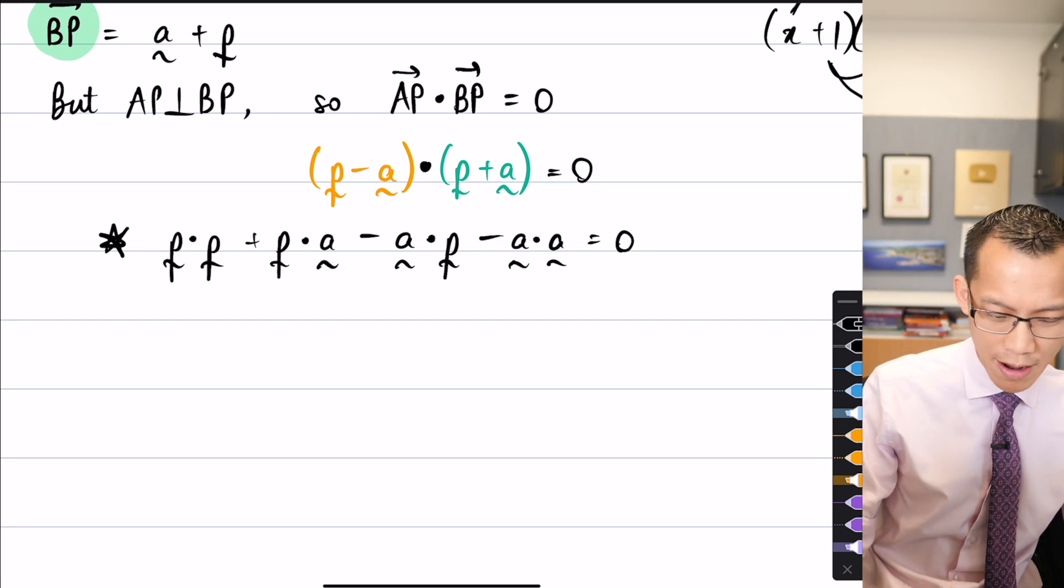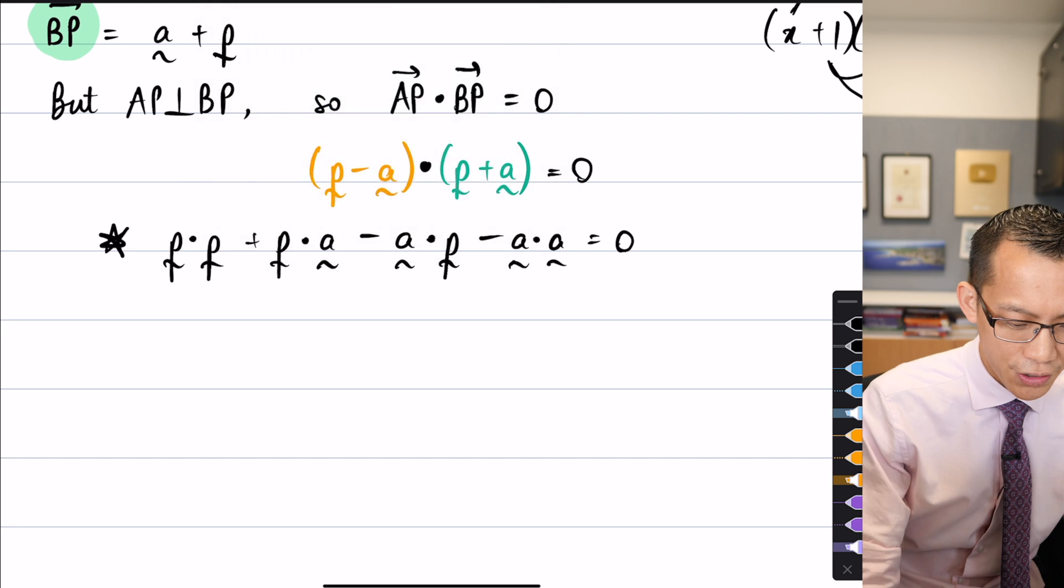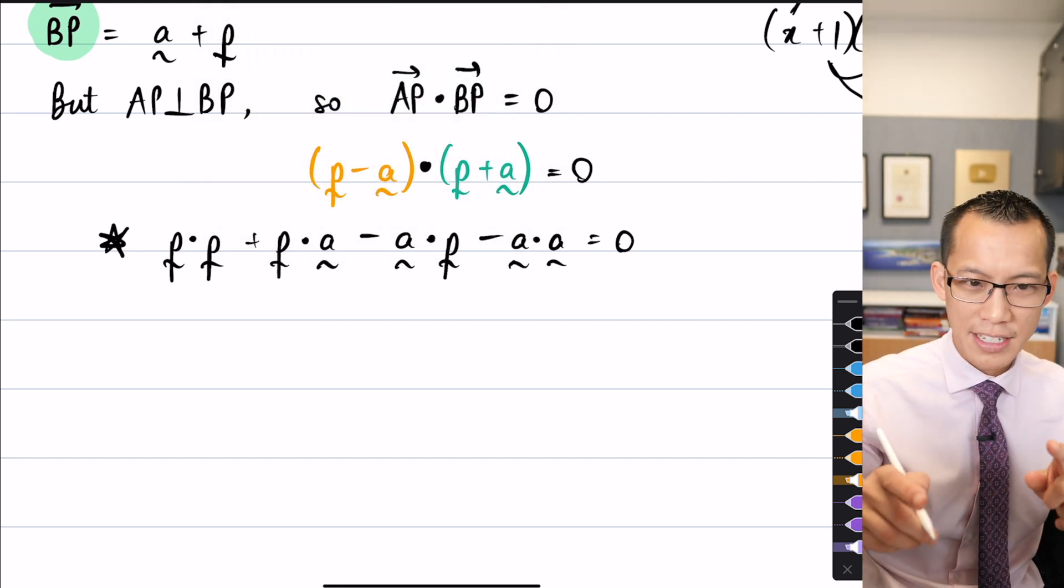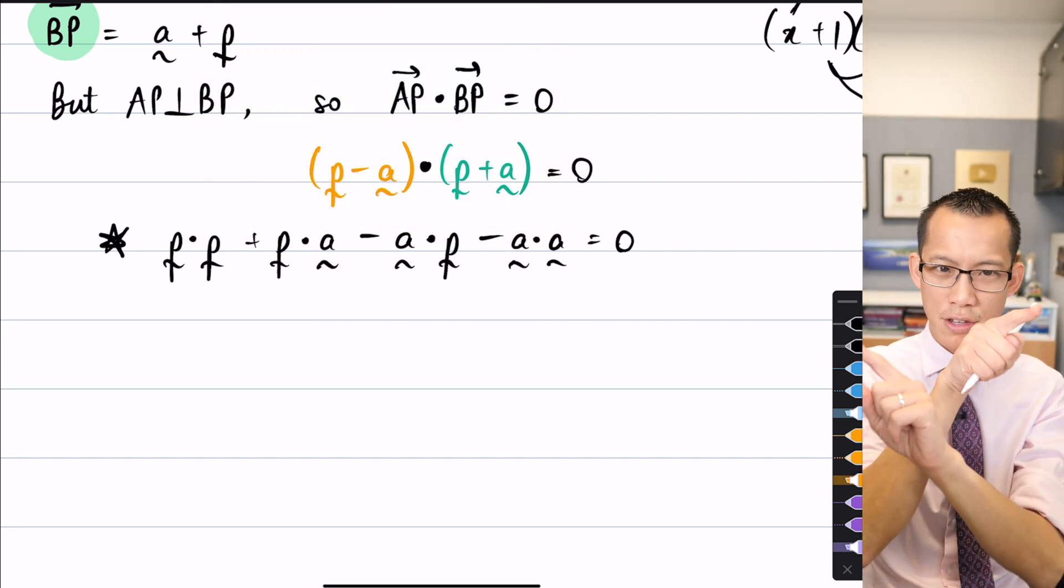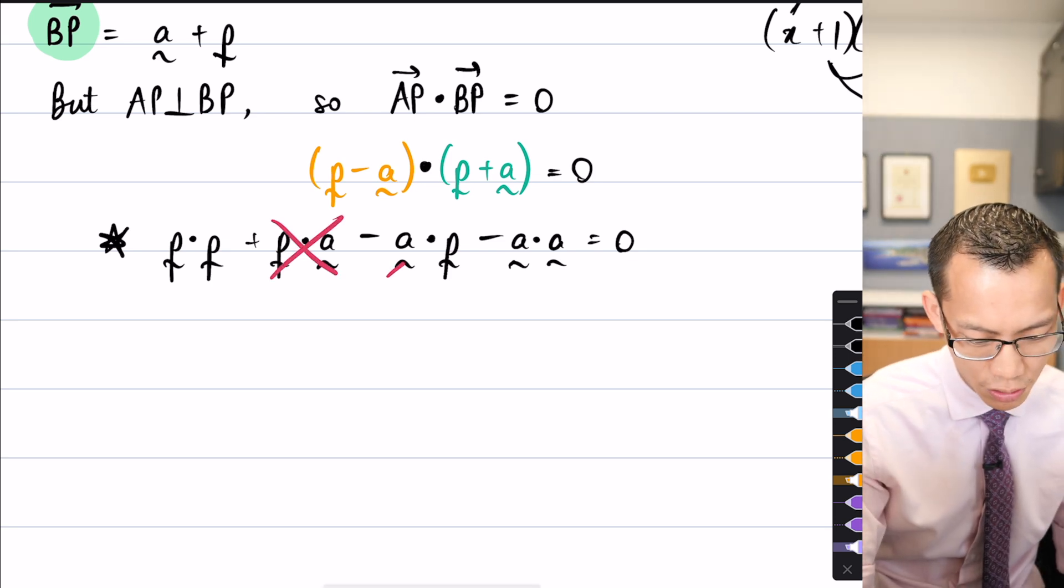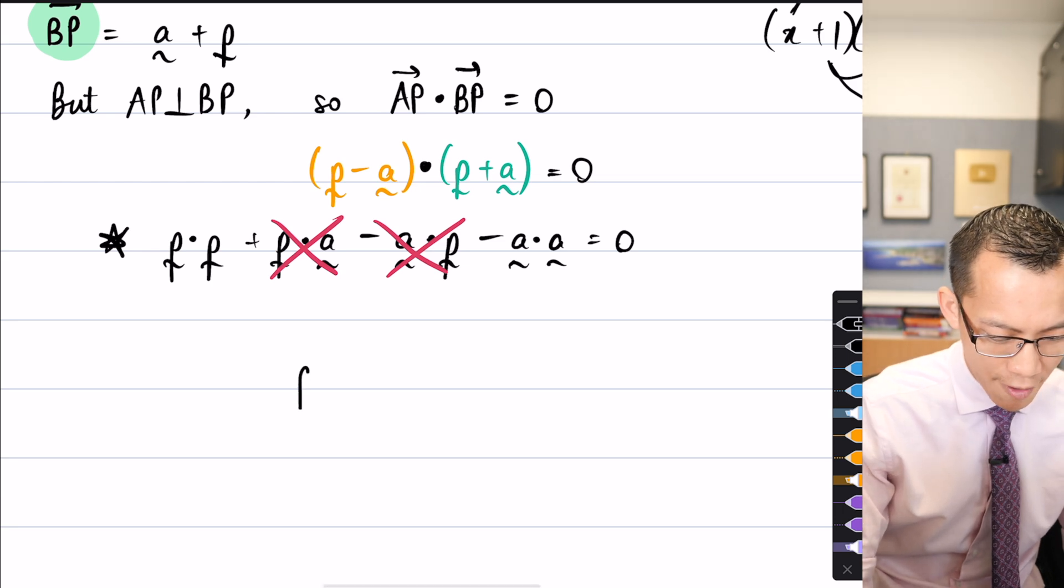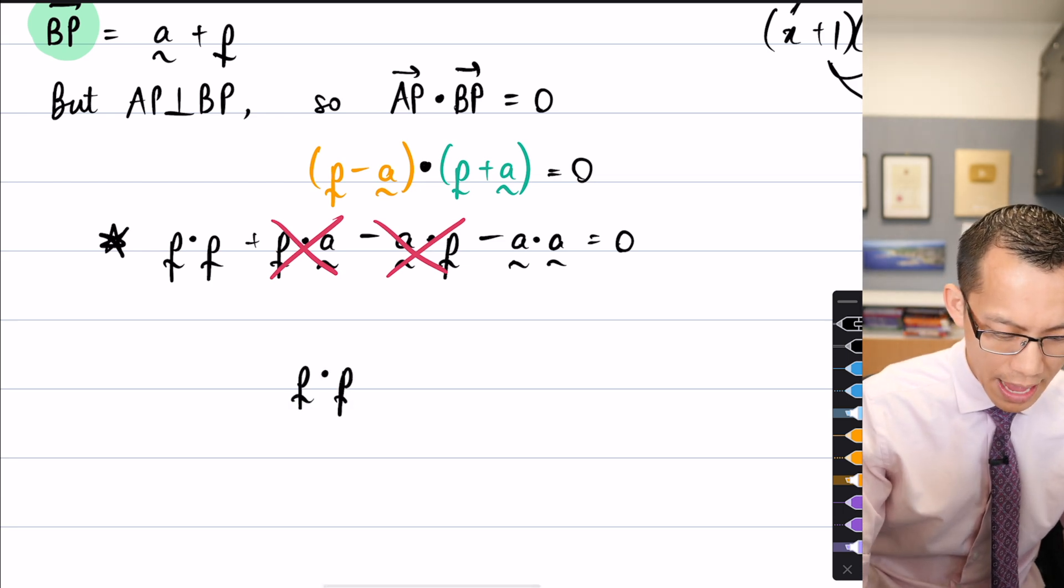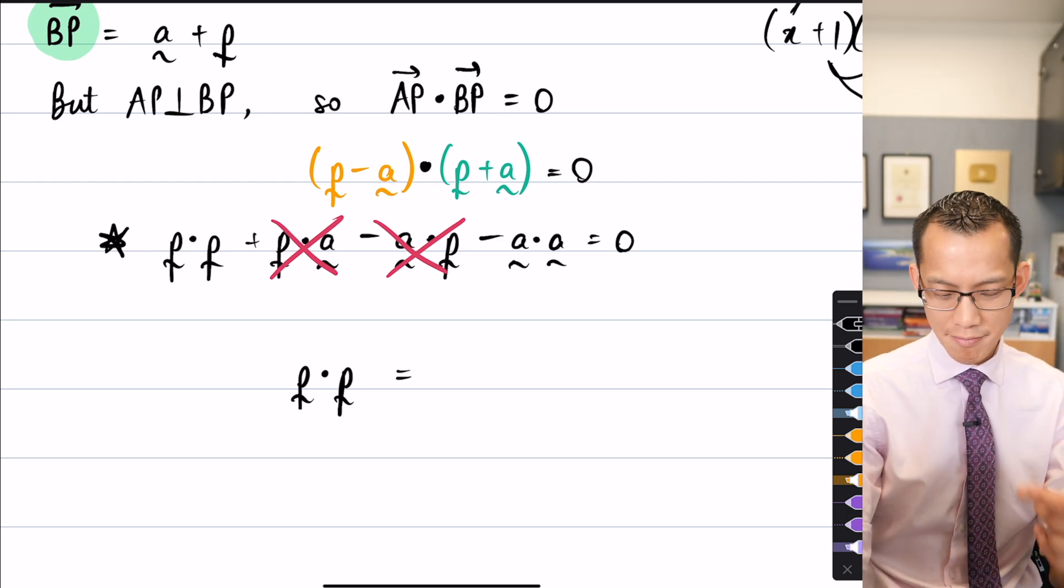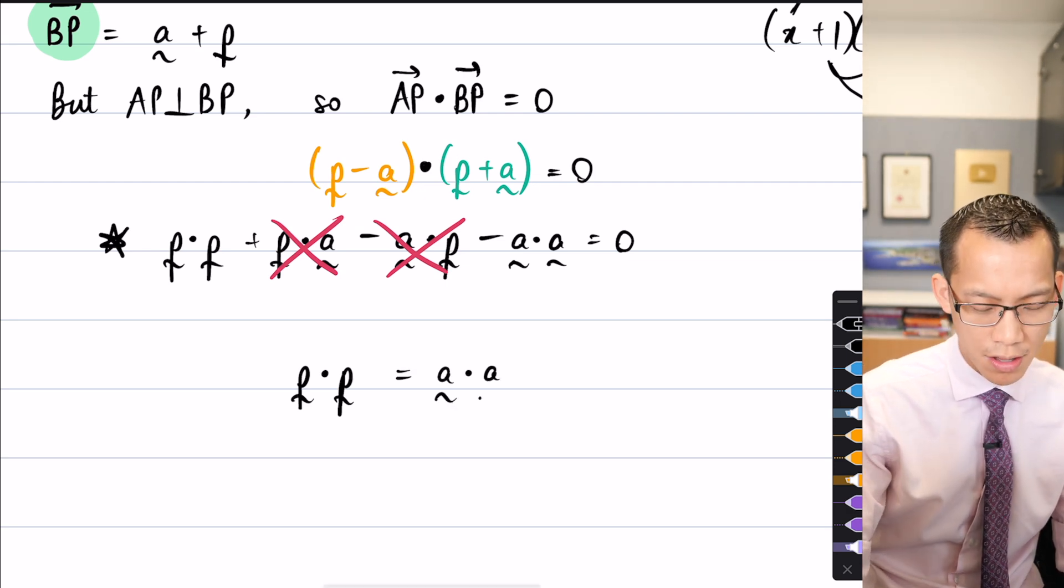There's some things that just cancel. What cancels? Very good, because the dot product is not just distributive, it's also commutative, because it's just multiplication. So these terms here, they just cancel. So what I end up with is, on the left-hand side, I have p dot p, and then if I add that minus vector there, that negative vector, I've got a dot a on the right-hand side.